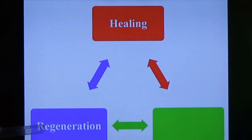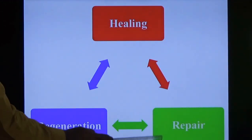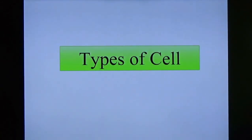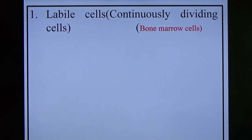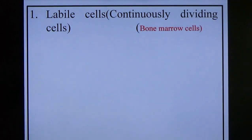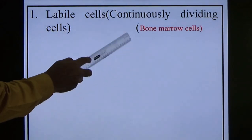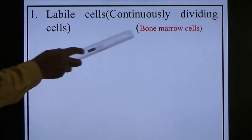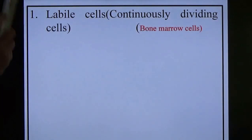There are two types of healing: number one is regeneration, another one is repair. Before studying regeneration, we study the types of cells. There are three types: labile cells — continuously dividing cells, since birth till death. Examples are bone marrow cells, RBC, WBC, and platelets.